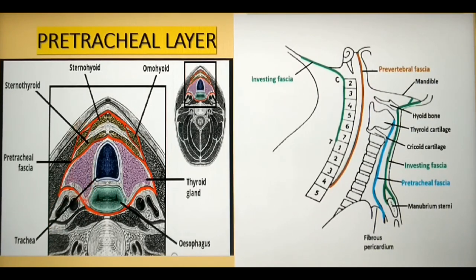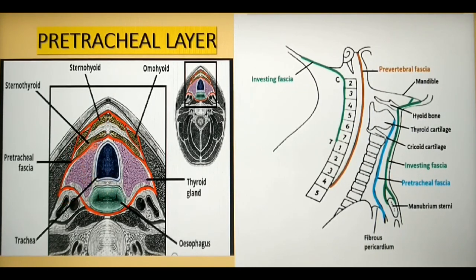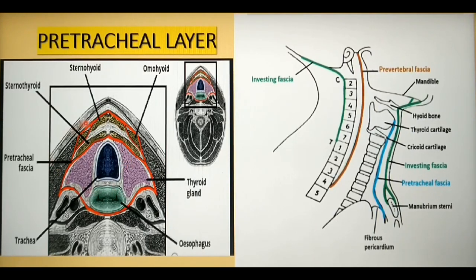The pretracheal layer has enclosed the infrahyoid muscles, the thyroid gland, the trachea, and the esophagus. Anatomically, the pretracheal fascia is divided into two parts: the muscular part, which encloses the infrahyoid muscles, and the visceral part, which encloses the thyroid, trachea, and esophagus.